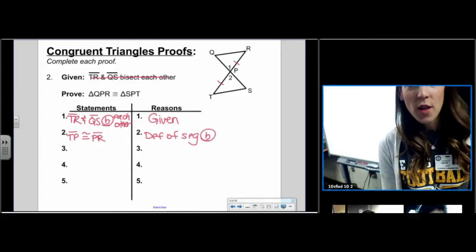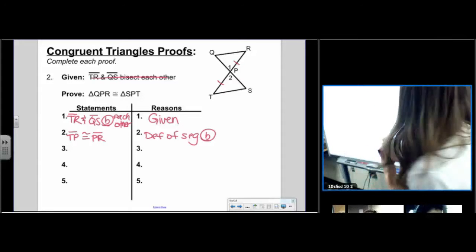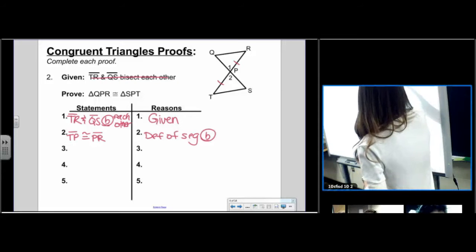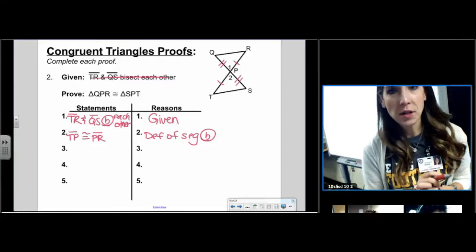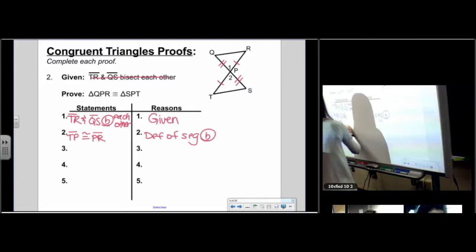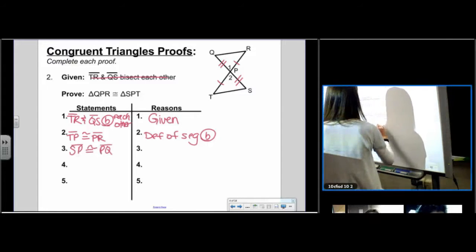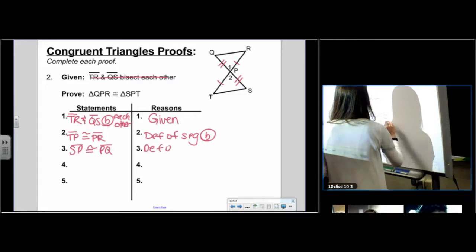Well, those segments were bisecting each other. So we have more information. We know that SQ was also bisected. So now we know SP is congruent to PQ, also definition of segment bisector.